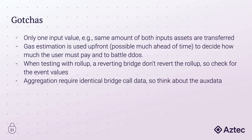A couple of gotchas to keep in mind: even though you have two input assets, you only have one input value. Gas estimation is used upfront — the sequencer uses it to figure out how much you'd pay — and this can happen multiple hours before the interaction is executed, so it's important that it's somewhat precise. When testing with the rollup, if the bridge reverts it doesn't revert the rollup, so you need to check the events. When aggregating, it requires identical call data — think carefully about what you put into the aux data, otherwise it might be impossible to aggregate efficiently.